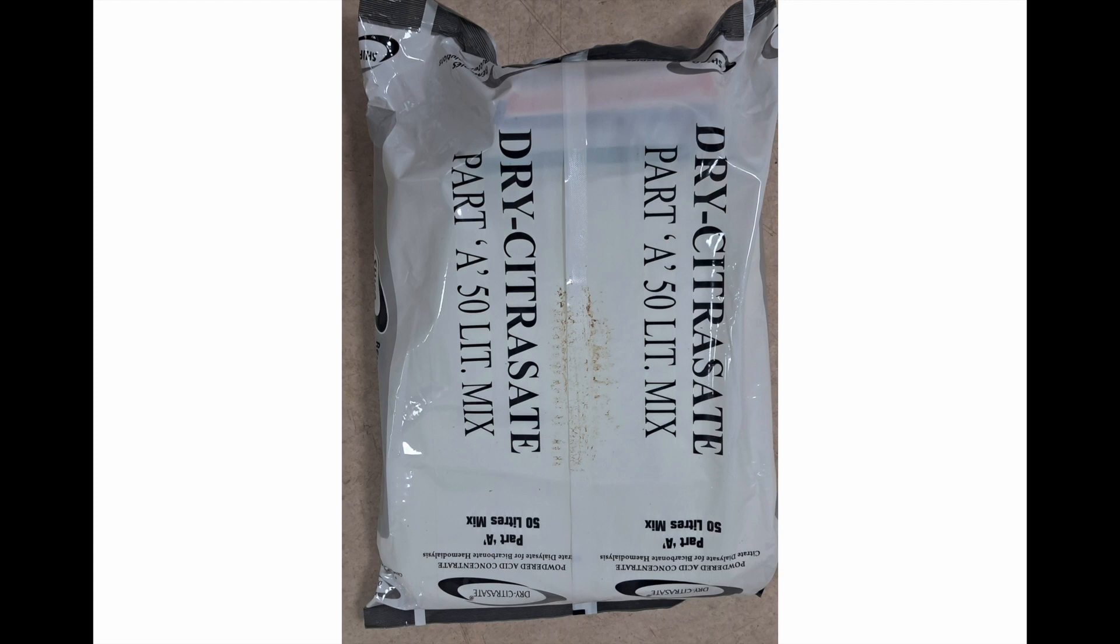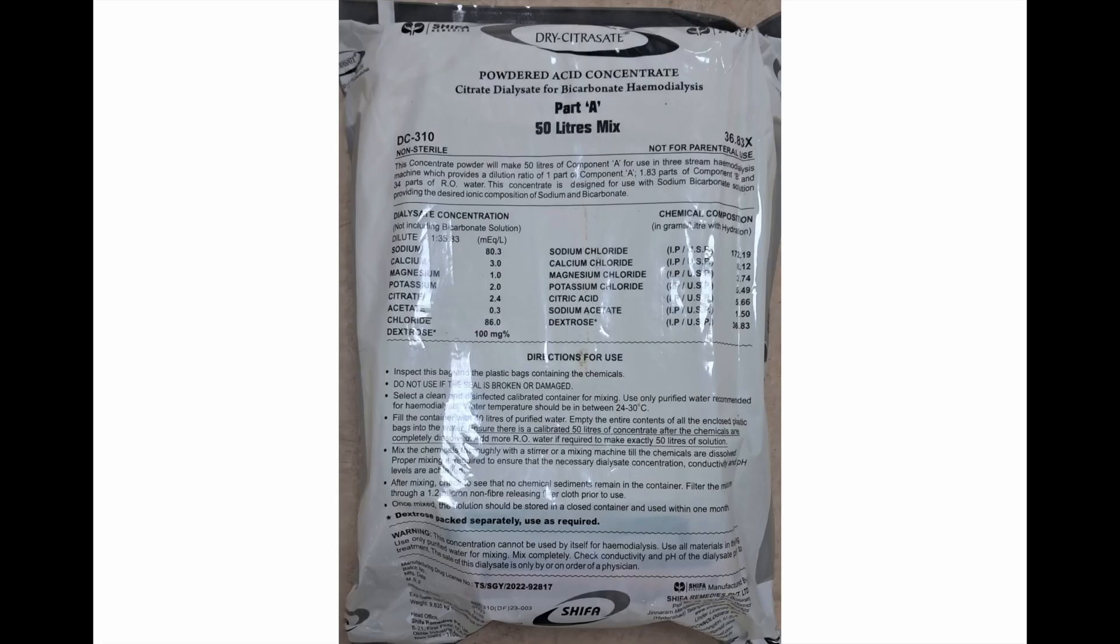This is the part A solution or the acid dry concentrate. This has to be mixed in 50 liters of water. The eventual chemical composition with dialysate is sodium chloride, calcium chloride, magnesium chloride, potassium chloride, citric acid, sodium acetate and dextrose.